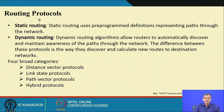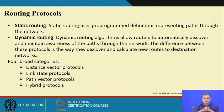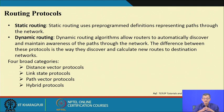A static route uses programmed or pre-defined paths through the network. Dynamic route algorithms allow routers to automatically discover and maintain awareness of paths through the network. The difference between these protocols is the way they discover and calculate routes to the destination; everybody's objective is to update the routing table so packets are forwarded optimally.